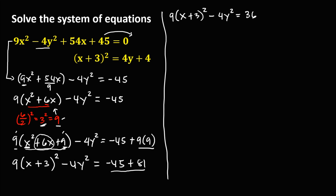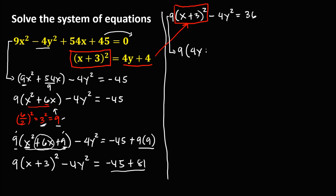So we have 9 times (x plus 3) squared minus 4y squared equals 36. Now we can use the substitution method, because from the second equation we have (x plus 3) squared. Substituting that value, this equation becomes 9 times (4y plus 4) minus 4y squared, then transpose the positive 36 to get negative 36 equals 0.